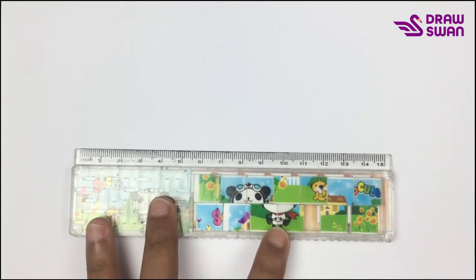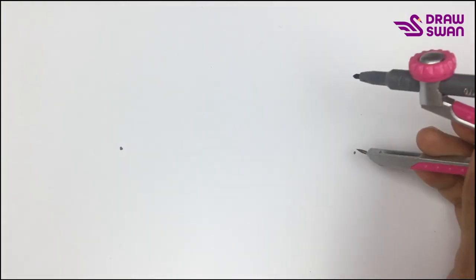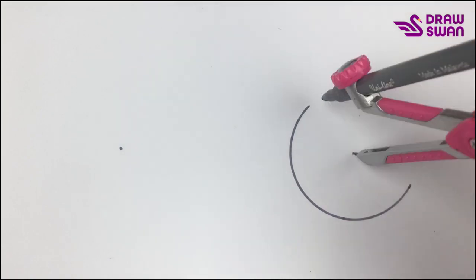So here you can see that I'm using my compass with a gray colored pen in it. I will start drawing the wheels of the cycle at the beginning.